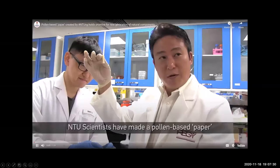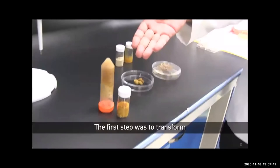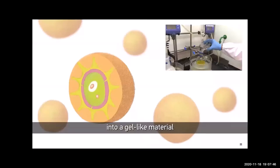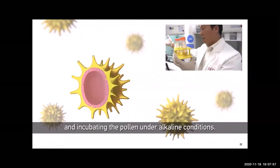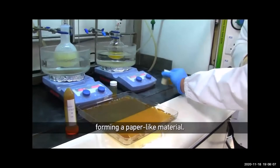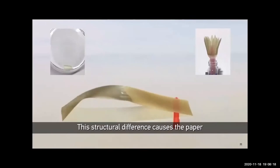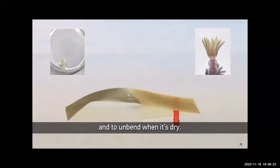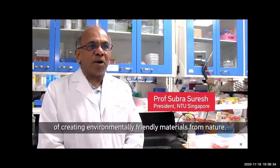NTU scientists have made a pollen-based paper that bends and moves in response to changes in humidity. The first step was to transform tough pollen grains from sunflowers into a gel-like material by removing the sticky oil-based pollen cement layer, extracting the pollen shells, and incubating the pollen under alkaline conditions. The resulting soft micro-gel particles were cast into a mold and left to dry, forming a paper-like material. The scientists found that the pollen paper's top layer was significantly rougher than the bottom layer. This structural difference causes the paper to bend in humid conditions and to unbend when it's dry. Rather than using plastic materials which have environmental issues, this points to future possibilities of creating environmentally friendly materials from nature.